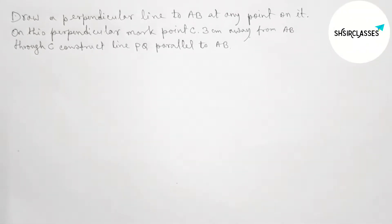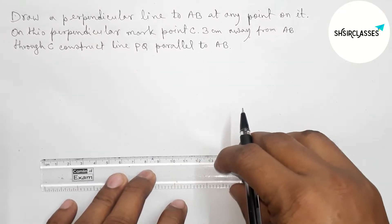Hi everyone, welcome to Essay Share Classes. Today in this video: draw a perpendicular line to AB at any point on it. On this perpendicular line, mark point C three centimeters away from AB. Through C, construct a parallel line to AB in an easy way. So let's start the video.